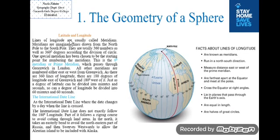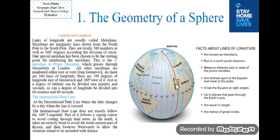Lines of longitude are usually called meridians. Meridians are imaginary lines drawn from the North Pole to the South Pole, and in total there are 360 of them, corresponding to 360 degrees in a circle. One special meridian has been chosen as the starting point for numbering: this is the zero-degree meridian or prime meridian, which passes through Greenwich in London. All other meridians are numbered either east or west from Greenwich. There are 180 degrees of longitude east of Greenwich and 180 degrees west of it. A degree of longitude can also be divided into 60 minutes and 60 seconds.